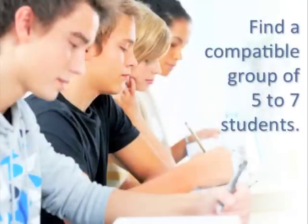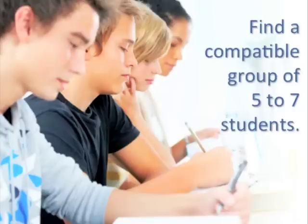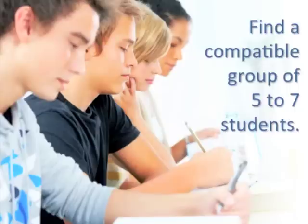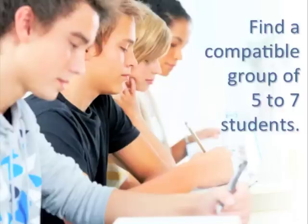As soon as absolutely possible, you'll want to choose your 5 to 7 group members, because within the first week of class you have a pre-project report due. Find 5 to 7 compatible students and either enroll yourself in a group by going to the Groups tab in D2L, or email me all of your group members and I can enroll for you. Your grade for the project very strongly depends on all of your group members, so it is extremely important to choose your group members well.